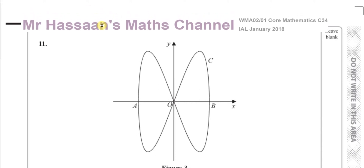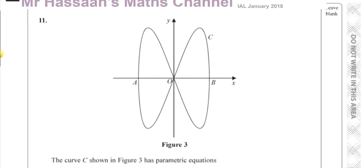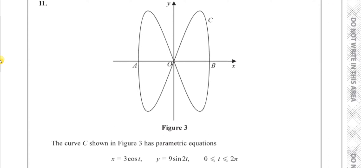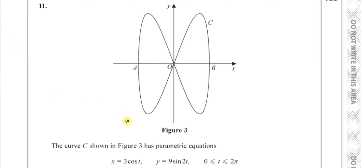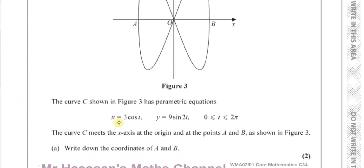This question is about a curve, which is a strange-looking type of curve that you normally get with a parametric equation. The curve is defined by the parametric equations x equals 3 cosine t and y equals 9 sine 2t, for values of t between 0 and 2 pi inclusive.